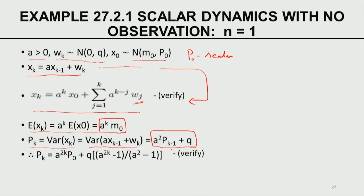Please understand this variance has two components: one coming from the initial covariance — the distribution of the initial condition — and the second coming from the model noise. This is the scalar analog of the vector forecast covariance we have already derived within the Kalman framework. If you now substitute P_{K-1} in terms of P_{K-2}, P_{K-2} in terms of P_{K-3}, and so on, and open it up and simplify, P_K depends on P naught: A to the power 2K times P naught, plus Q times (A^{2K} - 1) divided by (A² - 1). Again, I would like you to verify by solving this simple linear recurrence relation.